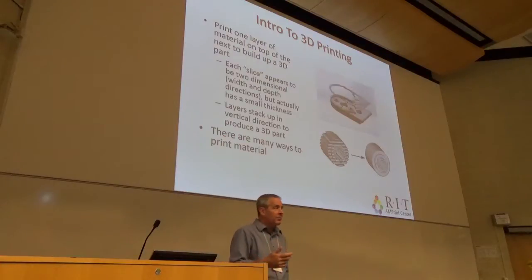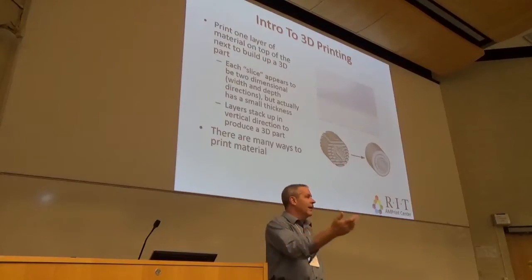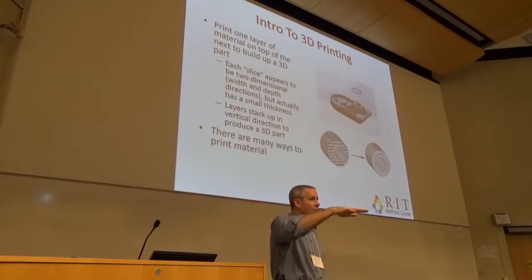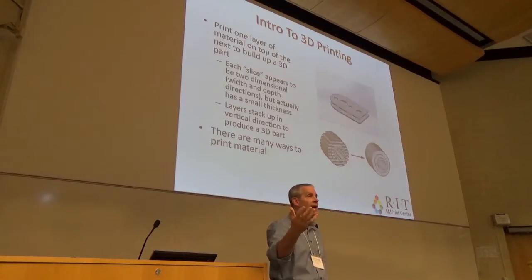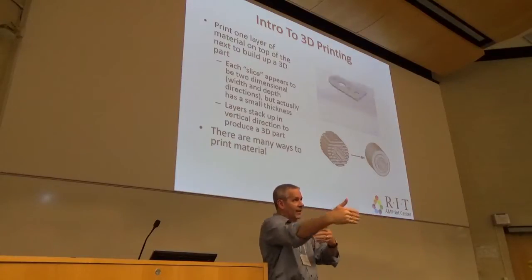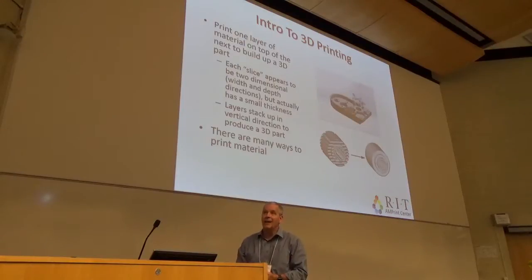The basic idea of 3D printing — most people are familiar with it conceptually. You print one layer of material on top of the next. Any time we print documents, if you run it through a photocopy machine, you've put down a layer of toner powder on that sheet of paper. We think of that as two-dimensional, but the toner powder actually has a very small thickness. If you ran that same sheet of paper through a printer a hundred times, you'd stack up a hundred layers of toner. That's the third dimension — width and depth and now we build up thickness.